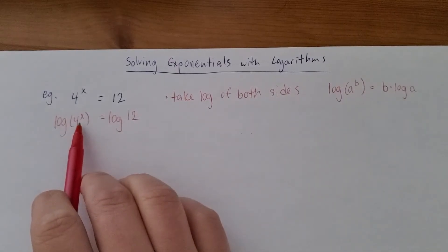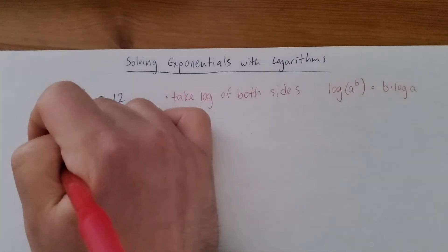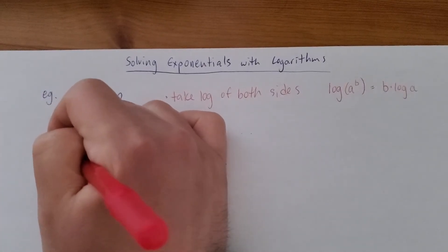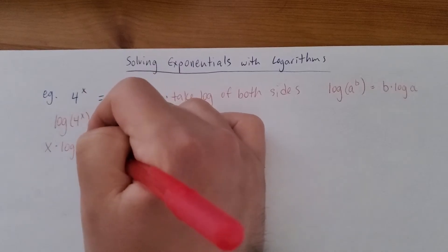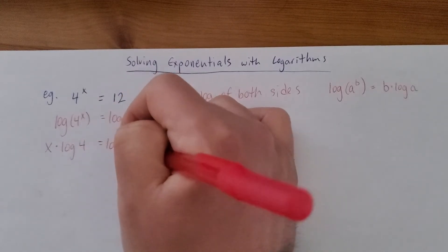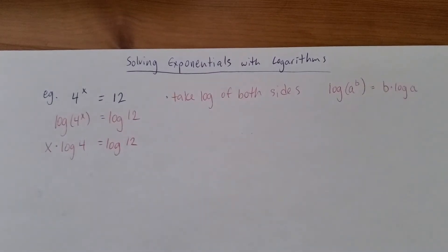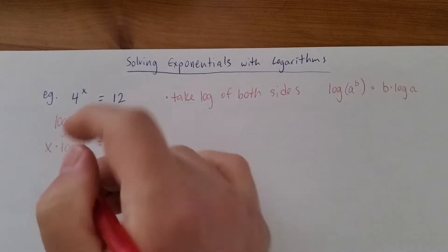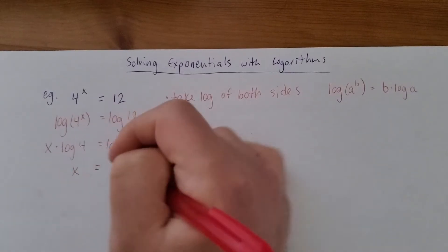In this case, we have an exponent of x, so we can pull that out. We can say x times log 4. This is nice. Now check it out. We can isolate x really easily.